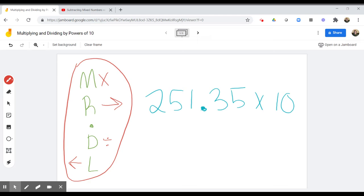So taking a look at this first problem, I have 251 and 35 hundredths multiplied by 10. Now I am multiplying, so this decimal right here is going to be moving to the right.